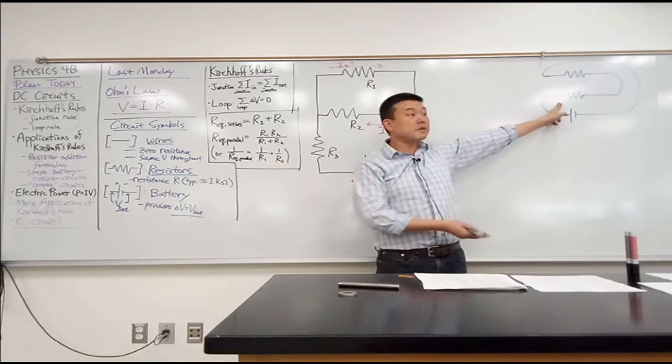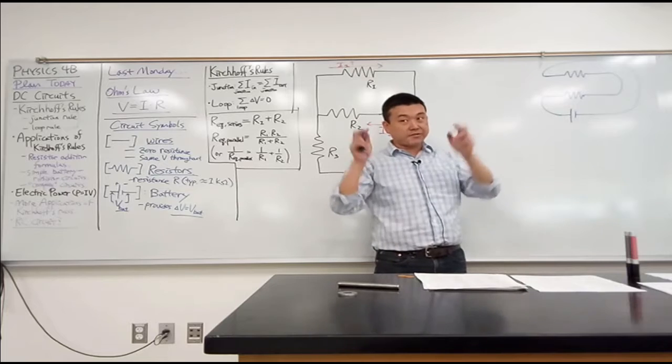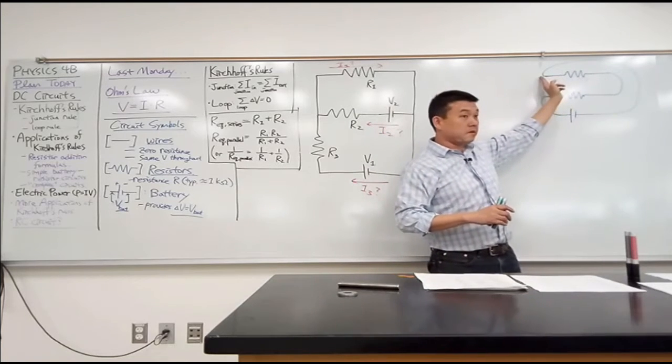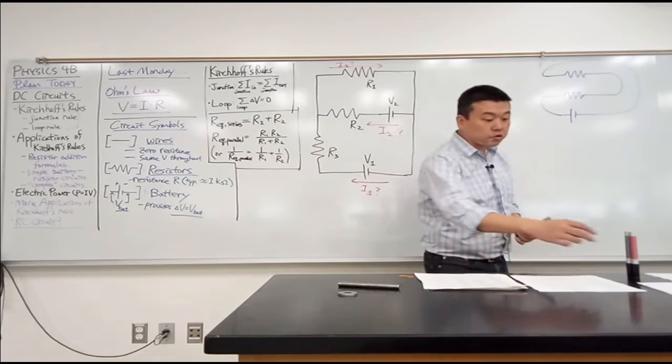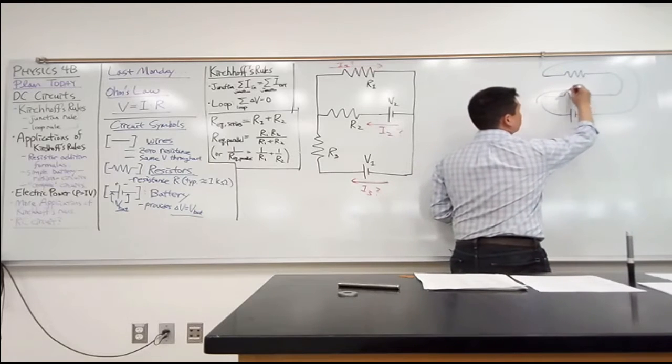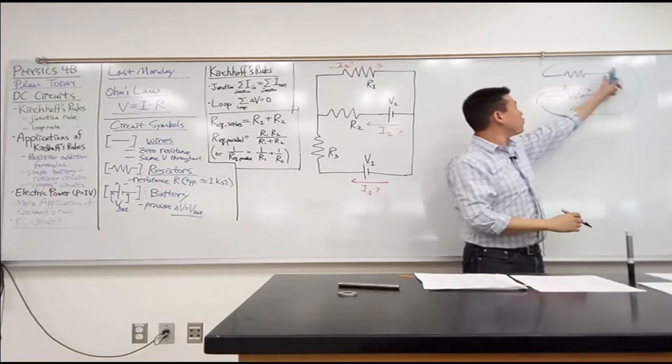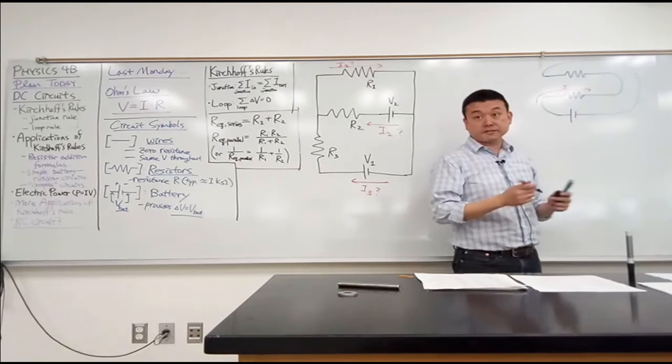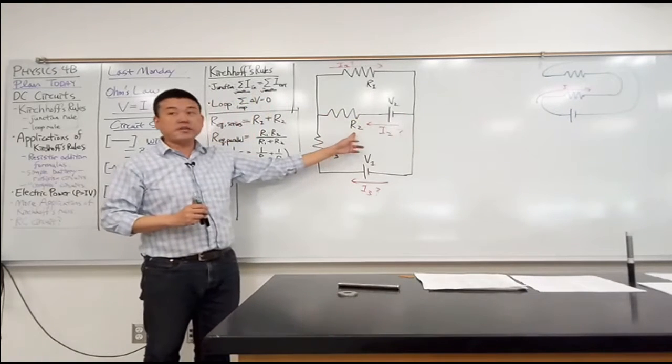One path for current to follow. You know, they are in series in the sense one comes first, and then the other comes. So in fact, that's how we are always going to define series. For two circuit elements to be in series, that means when a current flows through one element, that same current must flow through the other element. Whenever that happens, we call that series. So in that sense, is R1 and R2 in series?